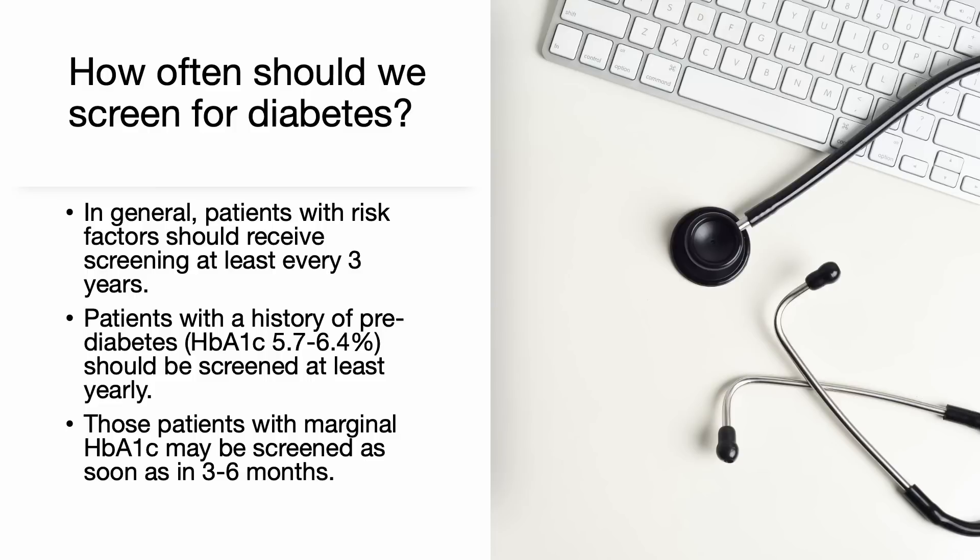How often should we screen for diabetes? In general, patients with risk factors would receive screening at least every 3 years. Patients with a history of prediabetes should be screened at least yearly. Those patients with a marginal A1c may be screened as soon as every 3 to 6 months.